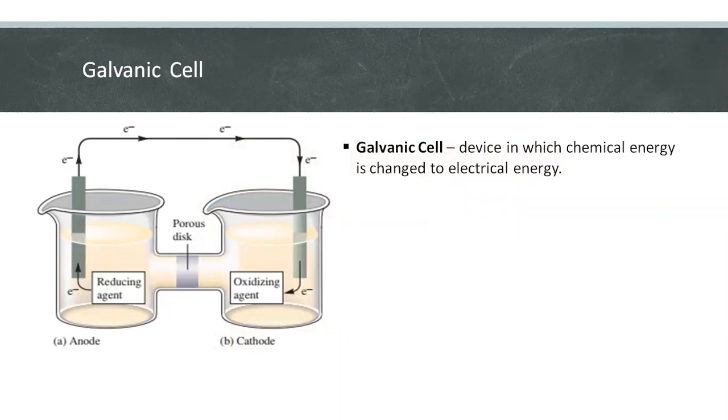This device in which chemical energy is changed to electrical energy is called a galvanic cell. The reaction in an electrochemical cell occurs at the interface between the electrodes and the solution where the electron transfer occurs.